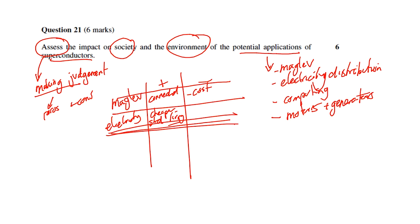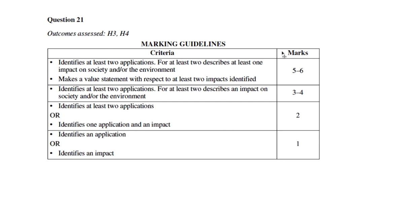I think it's really helpful to look at how the marking criteria was provided by the board of studies. Here is the marking criteria. A person will get five or six if they've identified at least two applications - I did that - and for at least two, we're really looking at the minimum of two, and I did at least two. A third or fourth one would be better. You describe at least one impact on society and/or environment. For five or six we're looking at a strong response that looks at a positive for one and a negative for the other, or positives for both and negatives for both.